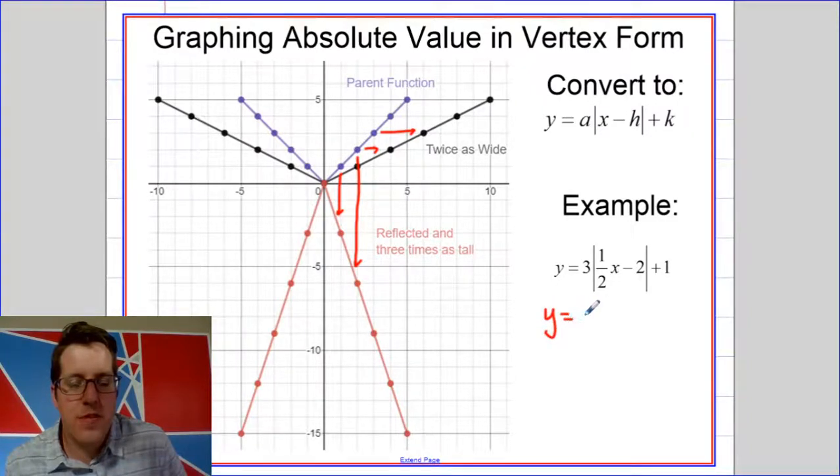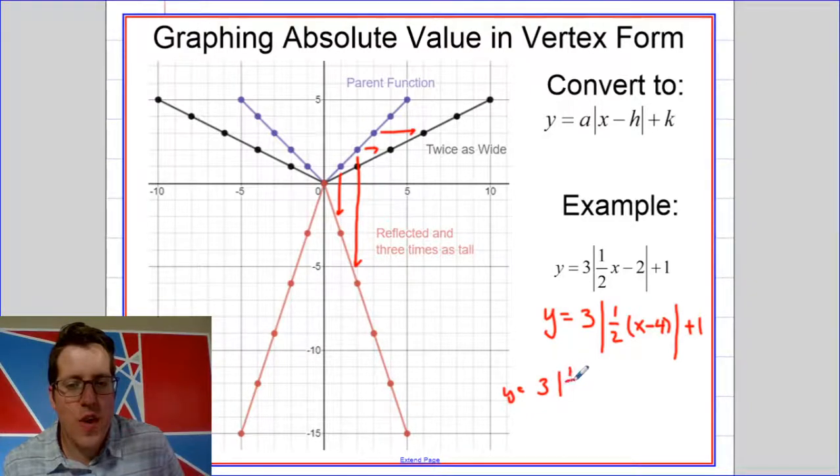So here is an example of a starting function and in order to graph it, I'm going to factor out the one half first just away from the x. Then I'm going to factor out the absolute value. Now mathematically, the way that you do that is you factor out the absolute value of one half.